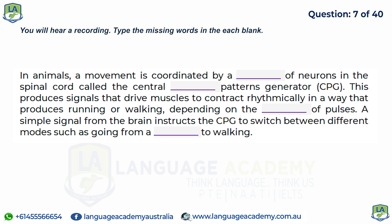In animals, movement is coordinated by a cluster of neurons in the spinal cord called the central pattern generator, CPG. This produces signals that drive muscles to contract rhythmically in a way that produces running or walking.